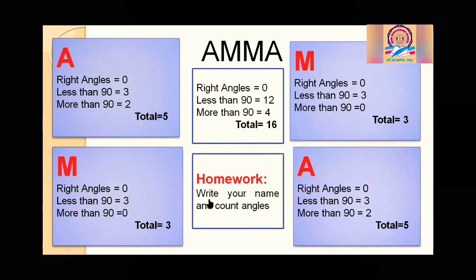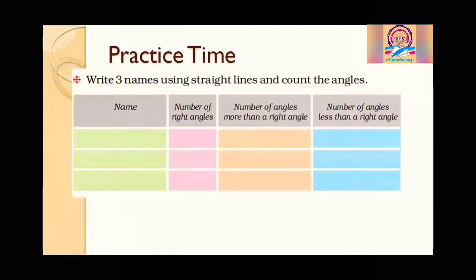A small homework for you: write your name and count the angles. It is better to write in straight lines so that the angles will be clear. Comment in the comment box how many right angles are in your name. For practice, write three names and count: the number of right angles, number of angles more than right angle, and number of angles less than 90 degrees.